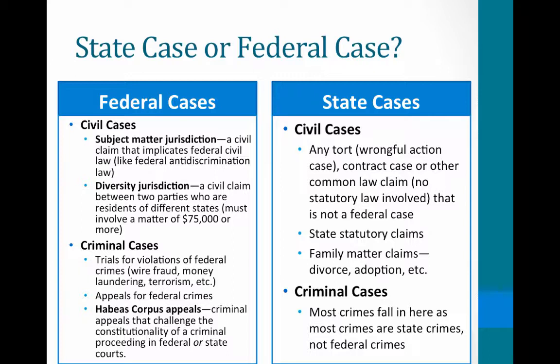Diversity jurisdiction exists so that neither party receives preferential treatment in their home state court — if someone lives in Ohio and another in Michigan, they can go to federal court as long as the matter involves over $75,000. Federal criminal cases are actually quite limited: these are trials for violations of federal crimes such as wire fraud, money laundering, and terrorism. Appeals for federal crimes also go through the federal system. One way state criminal cases can get into federal court is through habeas corpus — a procedure available after a conviction.